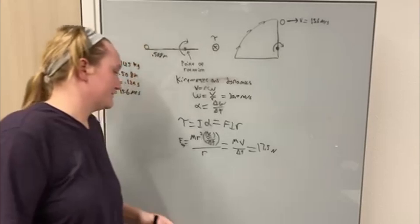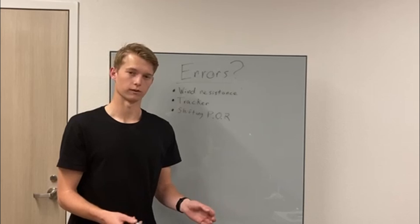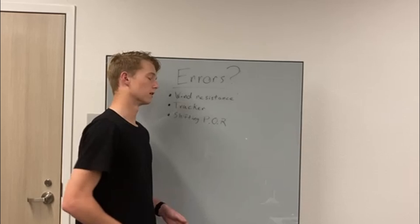Possible sources of error for our experiment could include wind resistance, which would affect our velocity calculated at the top. Tracker making a slight error in its calculations, which would also affect velocity or potentially the time over which the ball was thrown. And finally the shifting of my point of rotation, which was my hand.